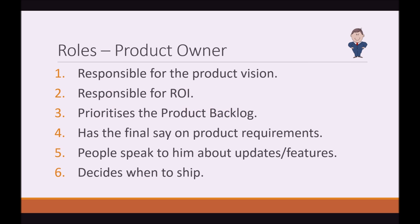The product owner is responsible for the product vision. He is responsible for ROI and he's responsible for prioritizing the product backlog. He has the final say on product requirements. People speak to him about updates and features that he can then add into the product backlog, and he decides when to ship an increment.